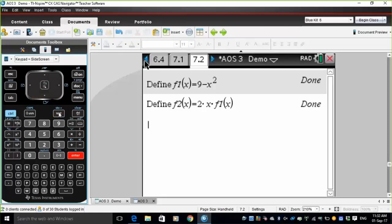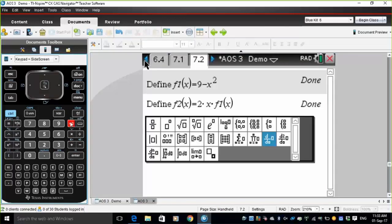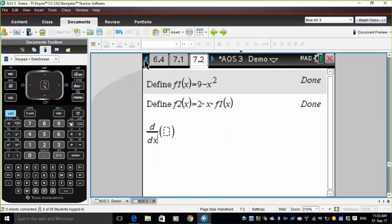Okay. Now, for a max-min problem, we want to find if something is a maximum or a minimum. We want to put its derivative equal to zero. Let's differentiate this function f2 of x with respect to x. So that gives me 18 minus 6x squared.